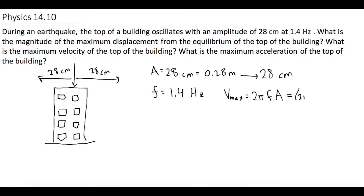So now we can plug it in: 2π times your frequency of 1.4 Hertz times the amplitude of 0.28 meters gives us a V_max of 2.463 meters per second, and they want it in centimeters per second.